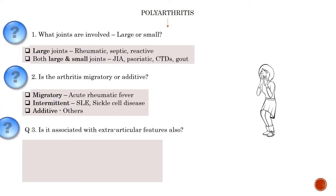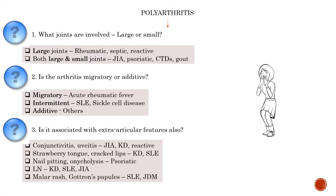The third question is whether the arthritis is associated with extra-articular features. On general examination, conjunctivitis and uveitis are seen in JIA, Kawasaki disease, and reactive arthritis. Strawberry tongue and cracked lips are seen in Kawasaki disease; malar rash is seen in SLE. Nail pitting and onycholysis are seen in psoriatic arthritis. Lymphadenopathy is characteristic of Kawasaki disease, SLE, and JIA. Malar rash and Gottron's papules are seen in SLE and juvenile dermatomyositis, respectively.